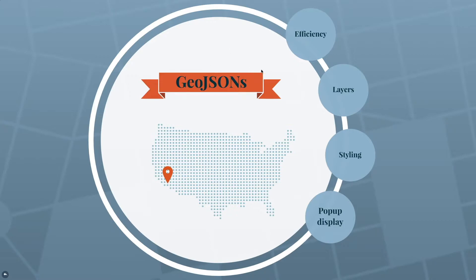In Leaflet, you're going to be adding GeoJSONs, and they're essentially going to be layers — each GeoJSON is going to be a different layer that you can add and remove from the map quite easily. You can style them individually, and you can even style the features inside each GeoJSON individually depending on its properties.